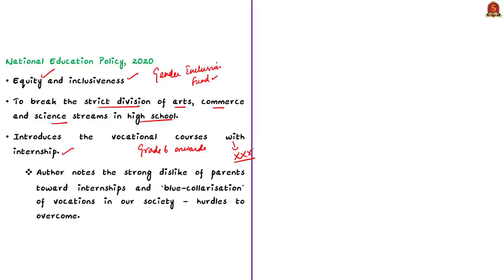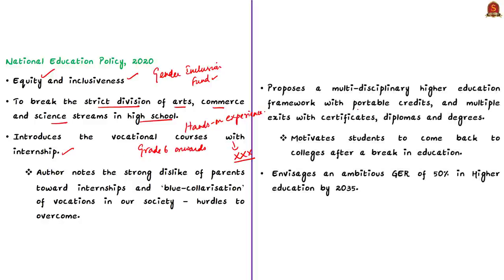The author notes this vocational provision might not be received well by parents who wish to stream their children into professions early. A behavioral change and change in mindset is required — children will have hands-on and experiential learning in school, creating curiosity. We should also overcome the low esteem attached to certain vocations in society. The policy proposes a multidisciplinary higher education framework with portable credits, multiple entry and exits, with certificates, diplomas, and degrees — giving more flexibility and removing the stigma of 'dropouts.' For higher education, the policy targets a gross enrollment ratio of 50% by 2035.